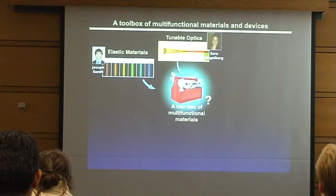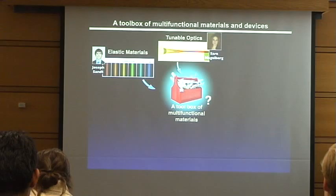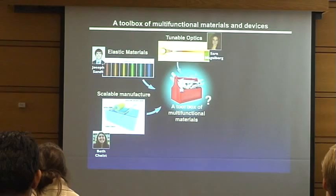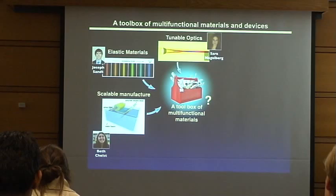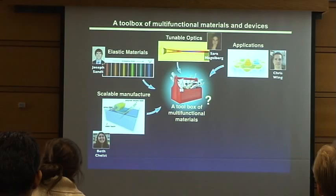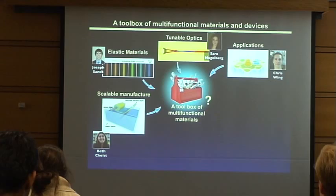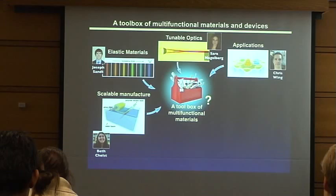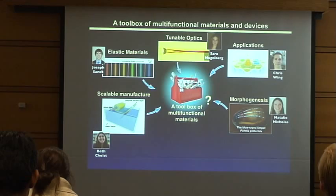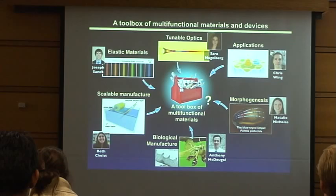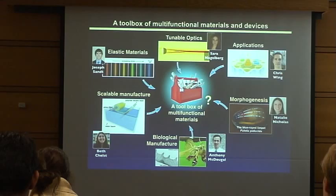What we really try to do in my group, as a new group, is build a toolbox of multifunctional materials. We look at optics combined with mechanics, and also little organisms under the microscope. We're looking into scaling and manufacturing because we want to make an impact in industrial production — showing we can make these materials in large quantities. We're also looking at applications in deformation sensors, and into morphogenesis of photonic structures, as well as hijacking biological machinery for manufacturing.